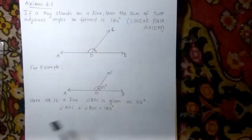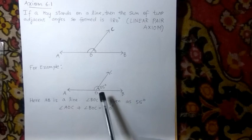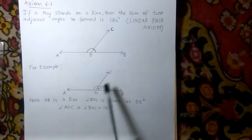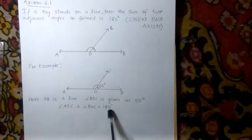For example, here is a line AB. Angle BOC is given as 55 degrees. Just now we learned that in a line, the sum of the adjacent angles is 180 degrees. So angle AOC plus angle BOC is equal to 180 degrees.